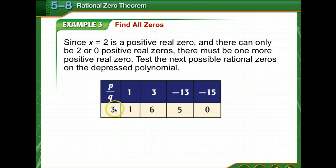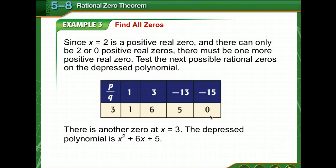The next possibility in our list was 3. Synthetic substitution tells us it is a zero. You know it's a zero if you get a zero for a remainder.